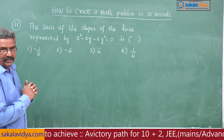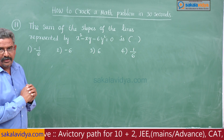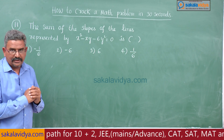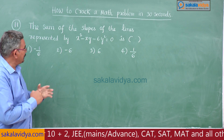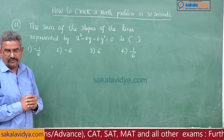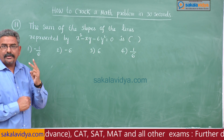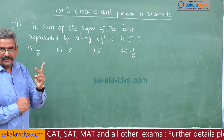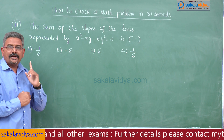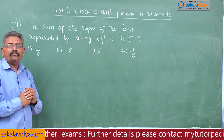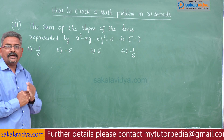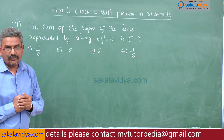This problem is related to the pair of straight lines chapter. That means x² - xy - 6y² = 0 represents two lines which pass through the origin. Since they pass through the origin, one will be y = m₁x and the other will be y = m₂x.